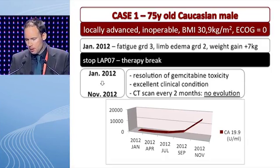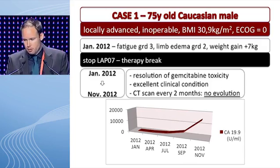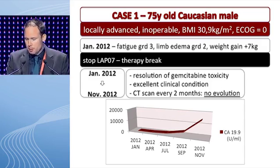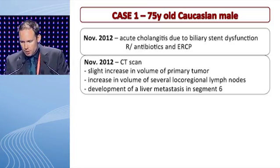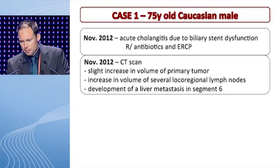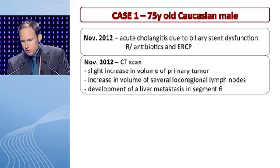Because of side effects, this patient was discontinued from the LAP07 trial and went on a therapy break. Quite surprisingly, this therapy break lasted for 11 months, from January 2012 up to November 2012. During this period we saw resolution of gemcitabine toxicity; the patient was in excellent clinical condition and got a CT scan every two months showing no evolution. However, there was a gradual increase in his tumor marker CA 19.9, which went up from about 37 to about 14,000. In November 2012 the patient presented with acute cholangitis due to biliary stent dysfunction, and the CT scan at this point showed a slight increase in volume of the primary tumor, an increase in volume of several local regional lymph nodes, and development of liver metastasis in segment 6.